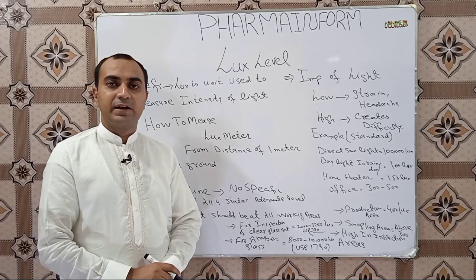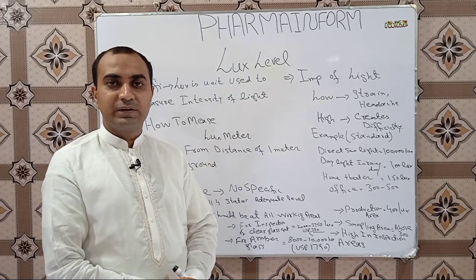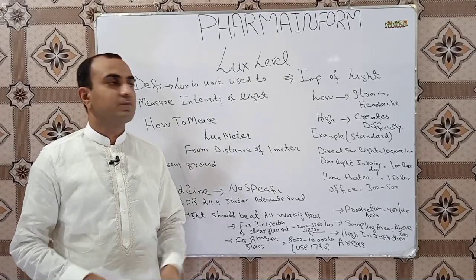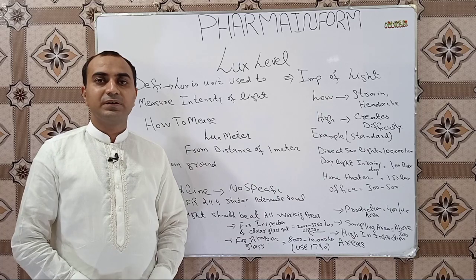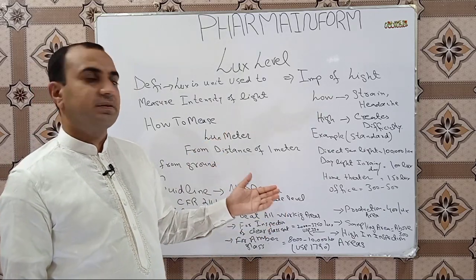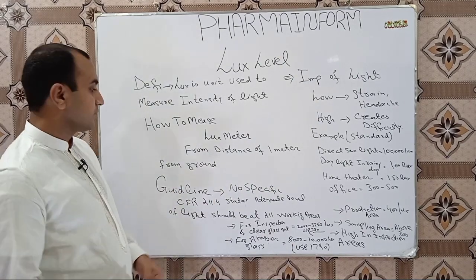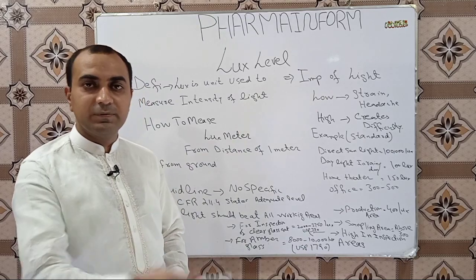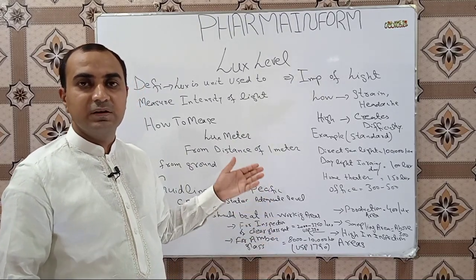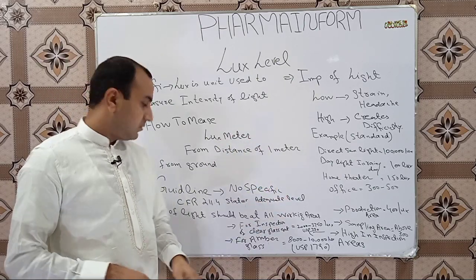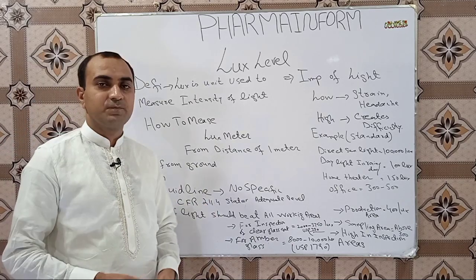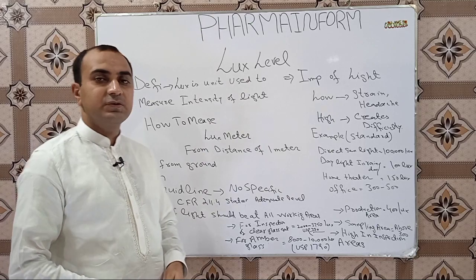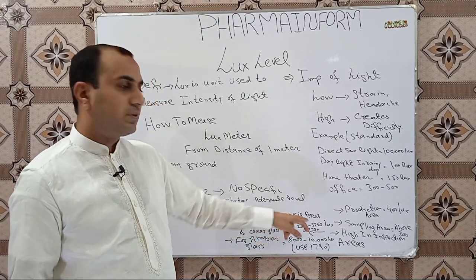We take three, four, or five values from a room and then take an average of those values to give a better reading. So the lux level is simply the intensity of light. Regarding guidelines, there are no specific guidelines that enforce values for lux level. Only CFR 211.4 states that an adequate level of light should be present at all working areas.